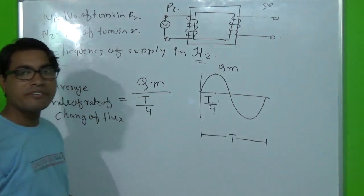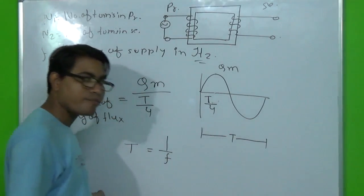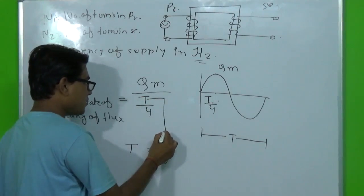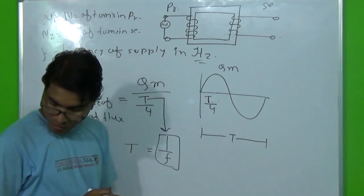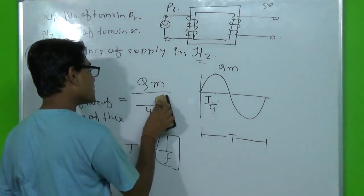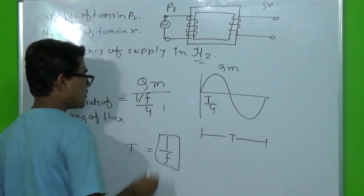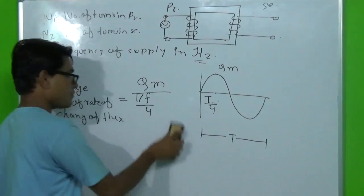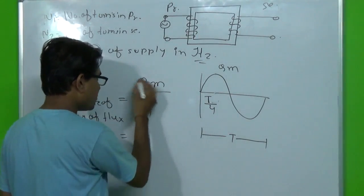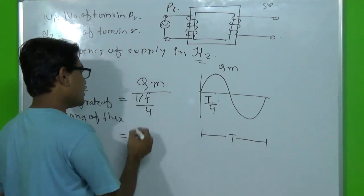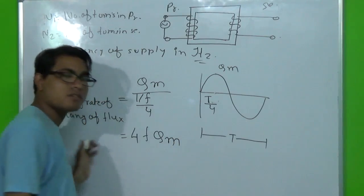There is one important relation between time period and frequency: time period T is equal to 1/F. We replace T with 1/F. When we solve all these equations, the average rate of change of flux becomes 4·F·Phi_M.